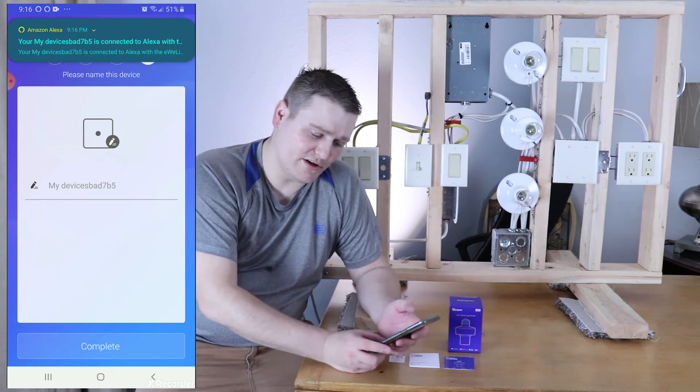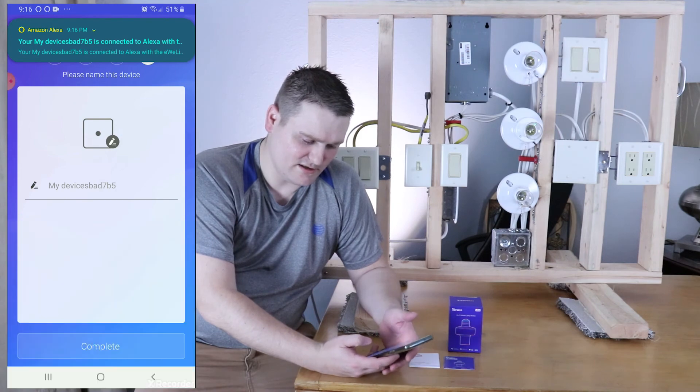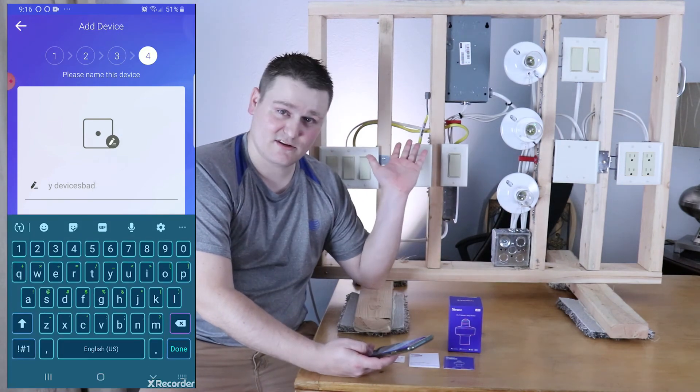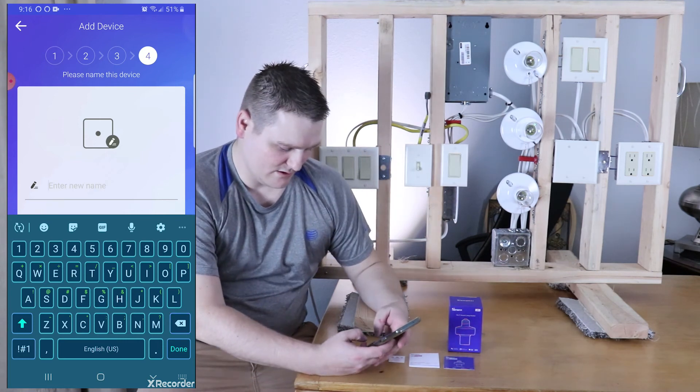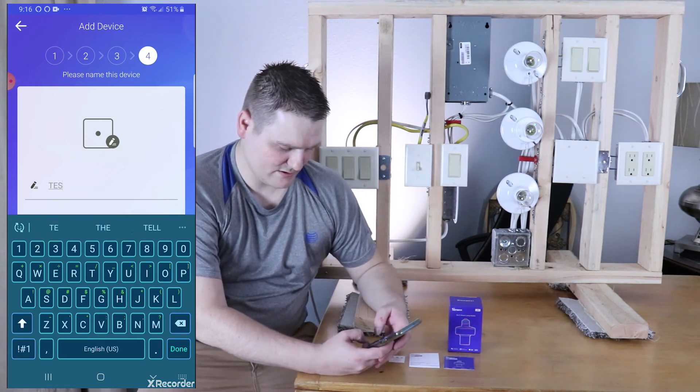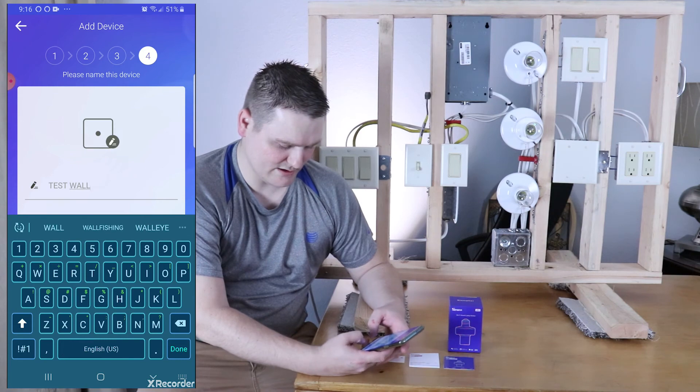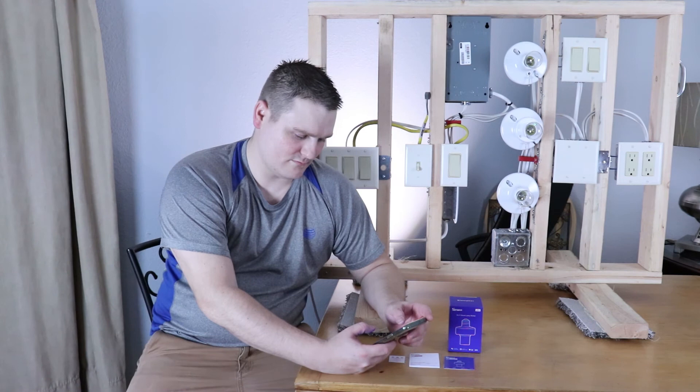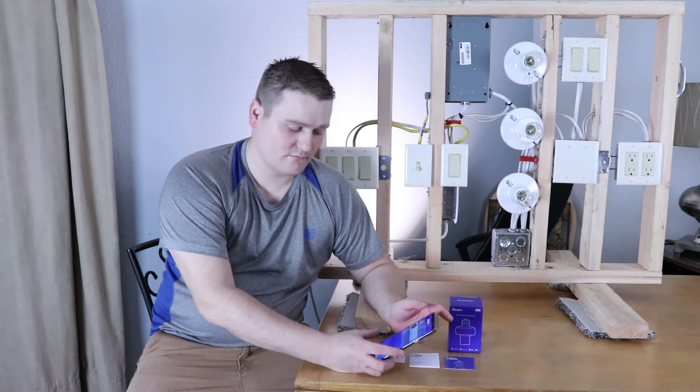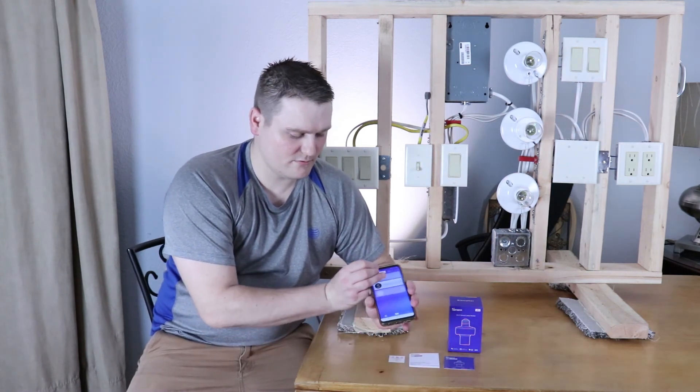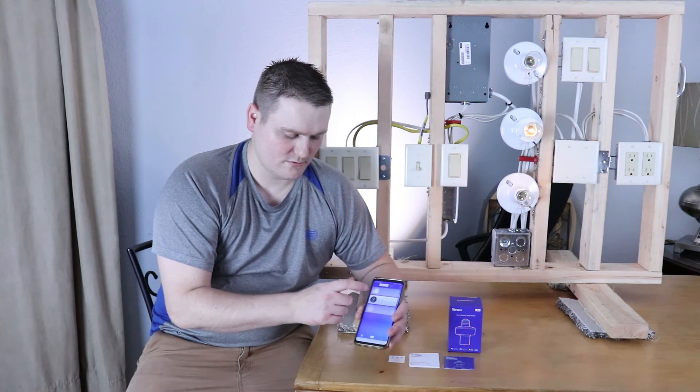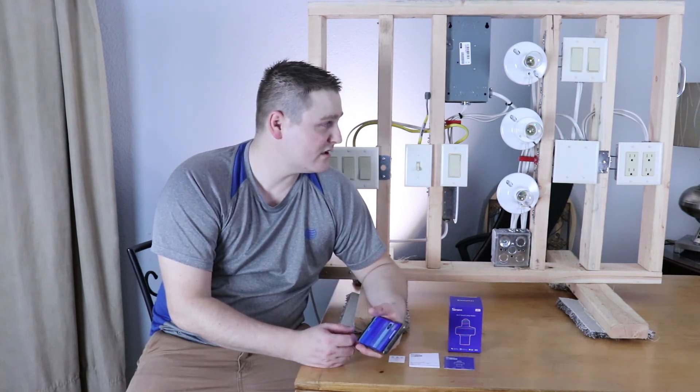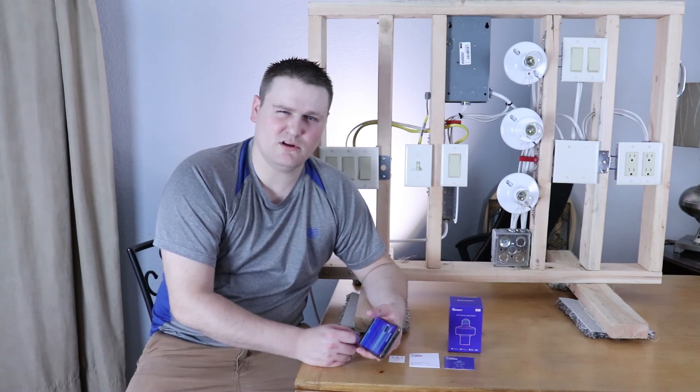So, there we go. I found the device. I'm just gonna go here, and I'm gonna type in test wall. Of course, cause it's our new test wall, the TechNet with test wall. And, cause that's where it is. Test wall, hit done, hit complete. And then you should be able to control that light. There we go. And that's pretty much the install. It is literally that simple.